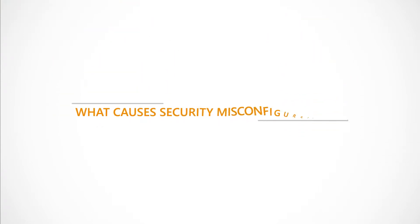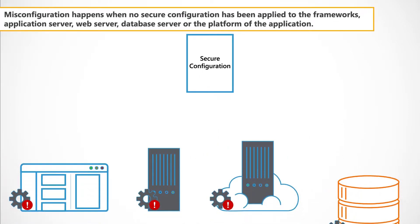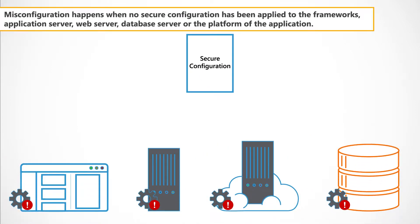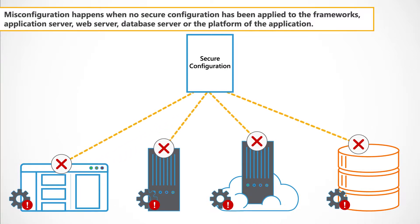What causes security misconfigurations? Misconfiguration happens when no secure configuration has been applied to the frameworks, application server, web server, database server, or the platform of the application.